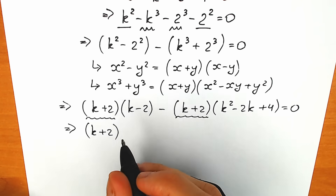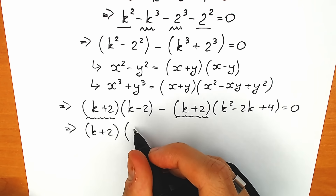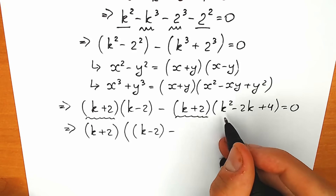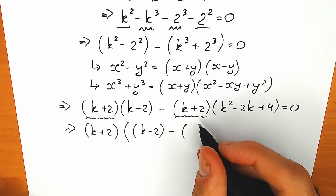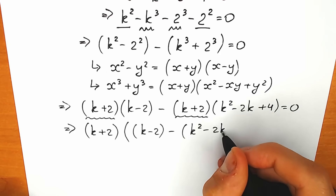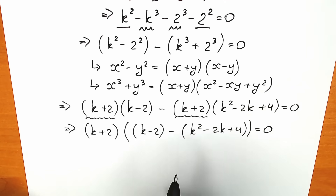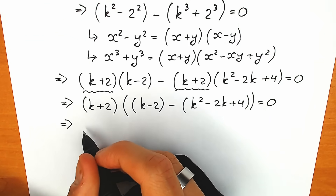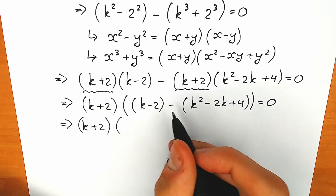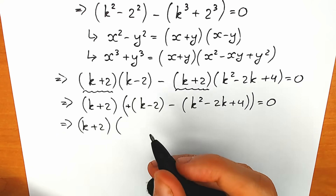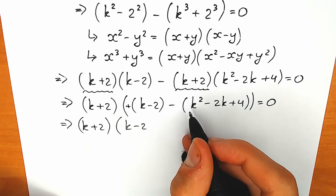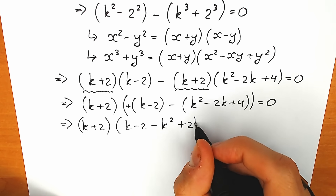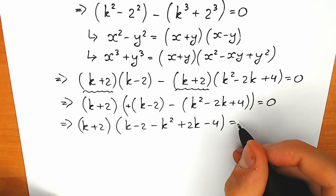So we factor out k plus 2. In the remaining parenthesis, from the first part we have k minus 2, and from the second part, since we factored it out, we keep k-squared minus 2k plus 4, but with a minus sign. Opening the parentheses: k minus 2, and then changing all signs to the opposite: minus k-squared plus 2k minus 4, equal to zero.